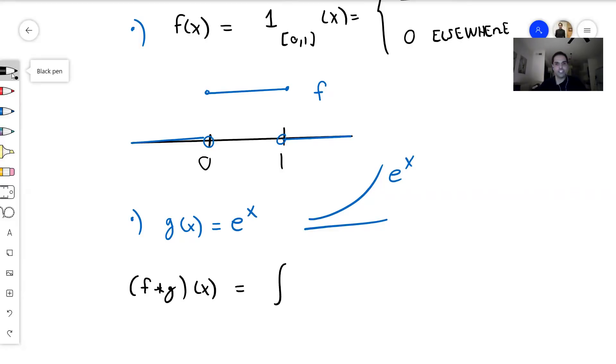So let's calculate f convolved with g of x. And again, by definition, that is the integral over R, the integral from minus infinity to infinity of f(y) g(x-y) dy. Make sure the sum is x, y plus x minus y is x.